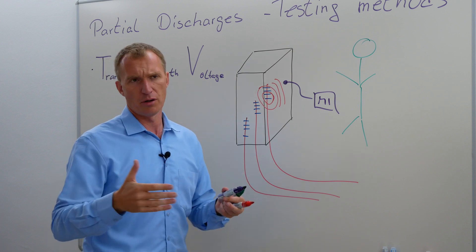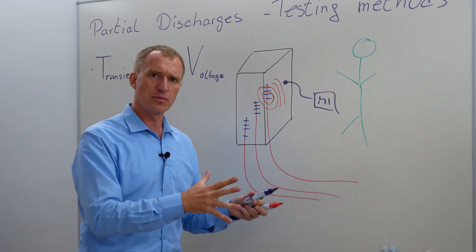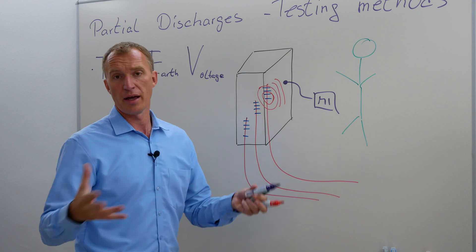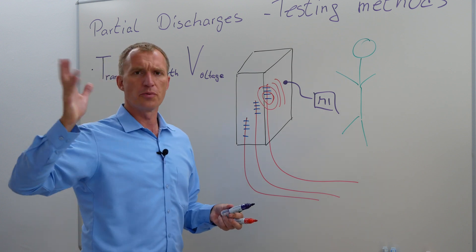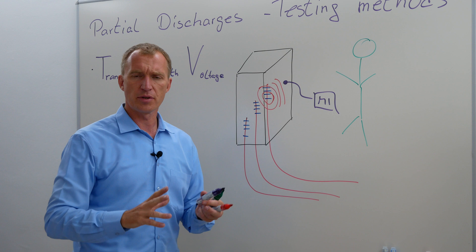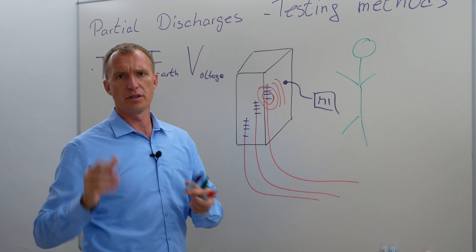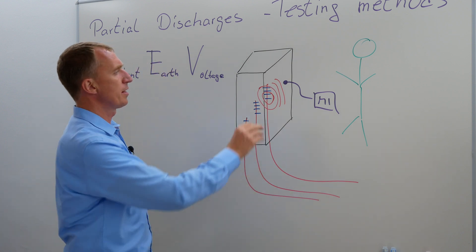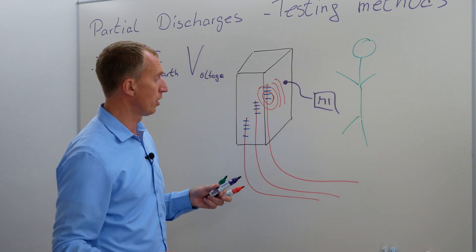Sometimes they work in the megahertz range, usually not where the IEC 60270 would expect you to measure, but at two, three megahertz they're usually starting. Sometimes they go up to 50, 70, sometimes even 100, and that gives you a possibility to figure out are there partial discharges or not.